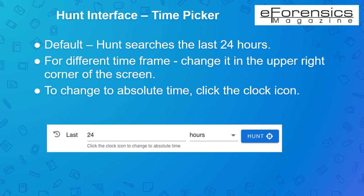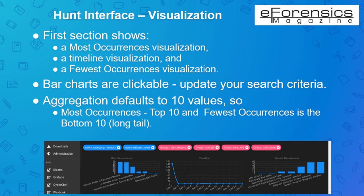The default time is relative, or you can change it to absolute time by clicking the clock icon. In the visualization option of the Hunt interface, you can find various information such as most occurrences, fewest occurrences and a timeline. The bar charts displayed are clickable, which helps you click a value to update your search conditions. A network trojan was detected as one of the most occurrences and is displayed in terms of number of occurrences. The accumulation of security events defaults to 10 values, so most occurrences are displayed as top 10 and fewest occurrences as the bottom 10.